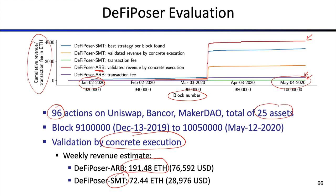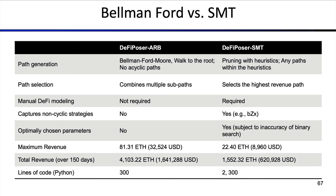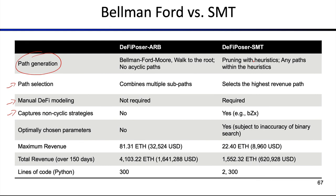Sometimes, with more complicated tools — if you really model your victim platforms — you might find attacks that the Bellman-Ford approach cannot capture. For an overall comparison: there are various methods for path generation and path selection. Some tools require manual modeling, some don't. Ideally you avoid manual modeling because it doesn't scale. However, you should capture non-cyclic strategies because most known attacks are non-cyclic. Also consider whether your parameters are optimal. DeFiPoser ARP has only about 300 lines of Python code, while the SMT version is almost an order of magnitude more complex.